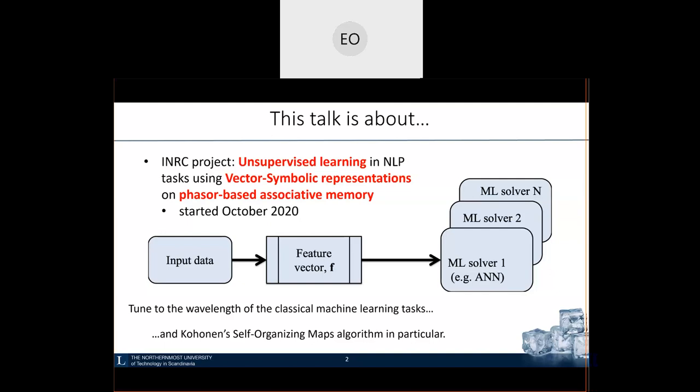During the talk I will present novel results. We have just started recently, at the beginning of October, but what you will hear today are preliminary results towards achieving the major objectives of the project. From the beginning I want you to tune to the wavelength of classical machine learning tasks. I know this is a neuromorphic community dealing with spiking neural networks, but for this talk please tune to the topic of classical machine learning.